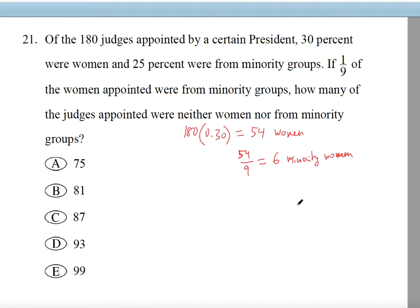Now we need to find the number of judges that are neither women nor from minority groups. First, we subtract 54 from 180. So 180 minus 54 gives us 126 men.